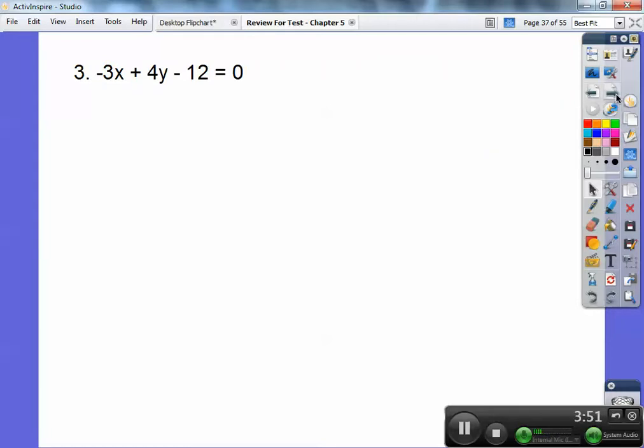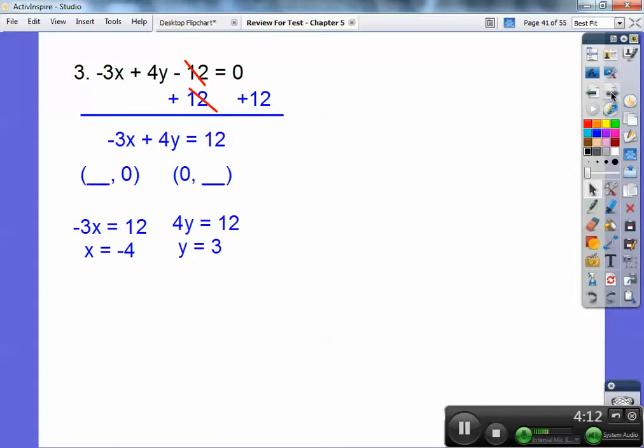Okay, this one right here. We haven't really done one of these in class. So what I'm going to do is plus 12 to both sides and then use my intercept method. That's what we just did on the last one was the intercept method. So when I plus 12 to both sides, I'm left with negative 3x plus 4y equals 12. And then use the intercept method. Let y be 0 for x and let x be 0 for y.